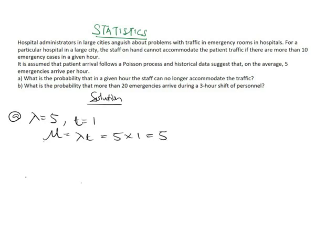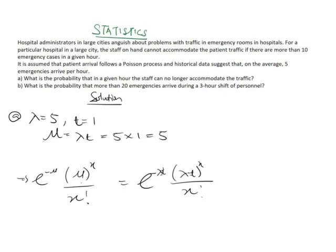The formula for the Poisson probability distribution is: e to the power of negative mu, multiplied by mu to the power of x, all over x factorial. This is equivalent to e to the power of negative lambda*t, multiplied by (lambda*t) to the power of x, all over x factorial. Now we need to identify x for this question.